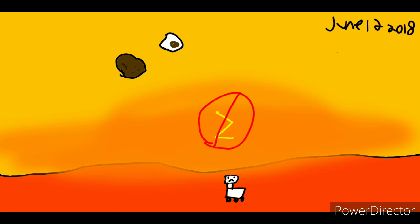June 12, 2018, a large dust storm covered the solar panels on Opportunity and made its batteries die.